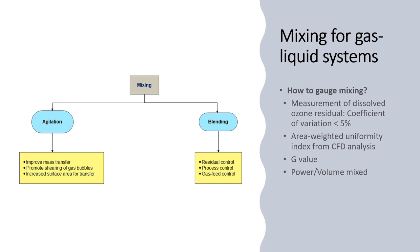In general, mixing can be classified into agitation and blending. With agitation our goal is to improve mass transfer to promote shearing of the bubbles and rapid renewal of the gas liquid interface. With blending we are looking at CT and residual control and gas feed control. To gauge mixing we use different ways and the most common one is the coefficient of variation which is more appropriate for blending. We look at the coefficient of variation of the dissolved ozone residual and try to keep it under 5%. If it's there then we assume it's really well mixed.